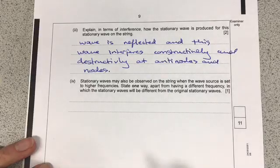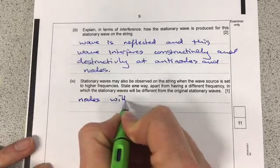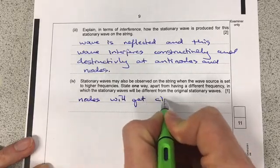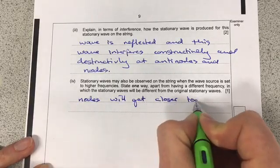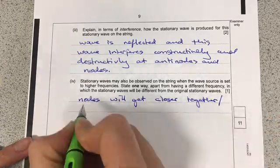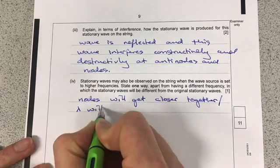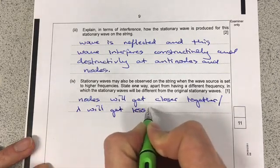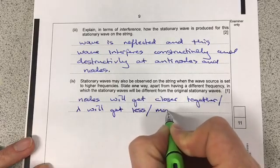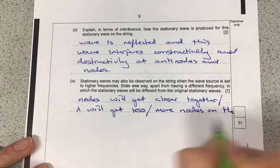There's actually three ways we can do this and they kind of mean the same thing. So, the nodes will get closer together, or you could say the wavelength will get less, or you can say more nodes on the string.